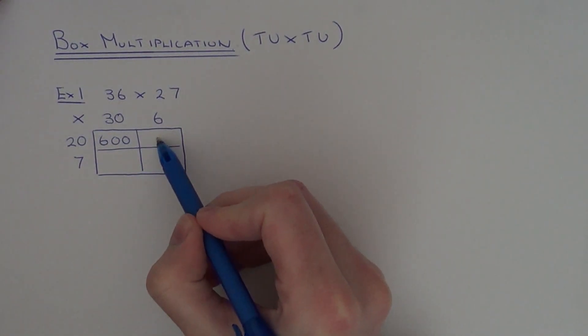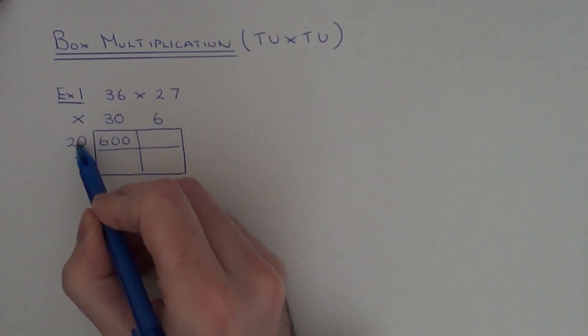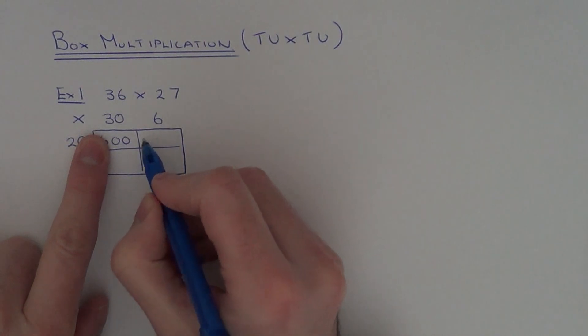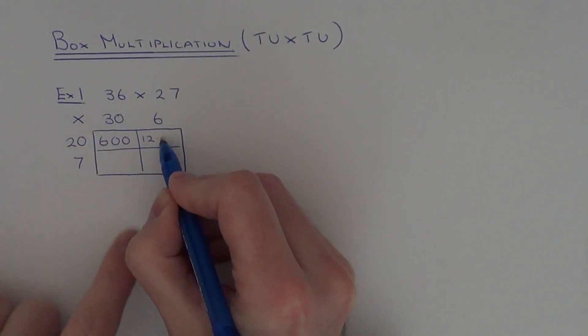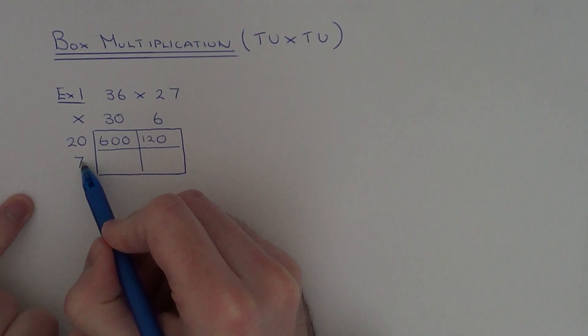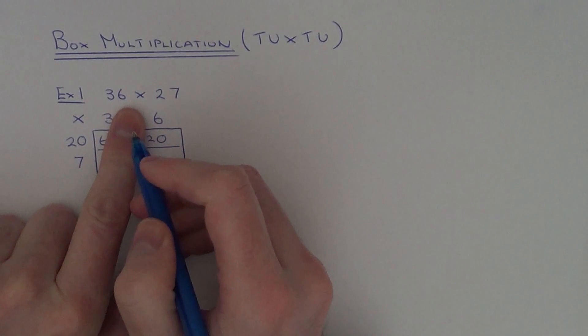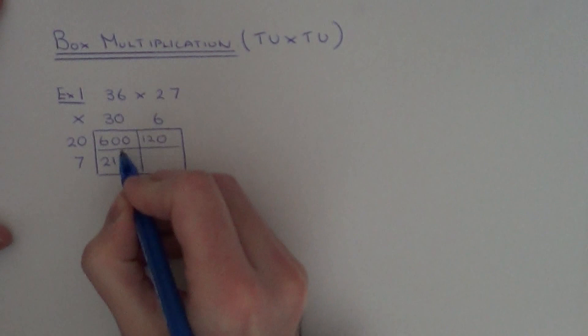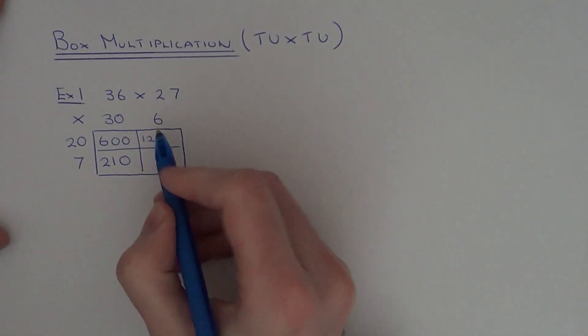For this box here we need to do 6 times 20. So again ignore your zero here and just do 6 times 2 which is 12 and then add the zero back on. And then the final box here we have 6 times 7 which is 42.